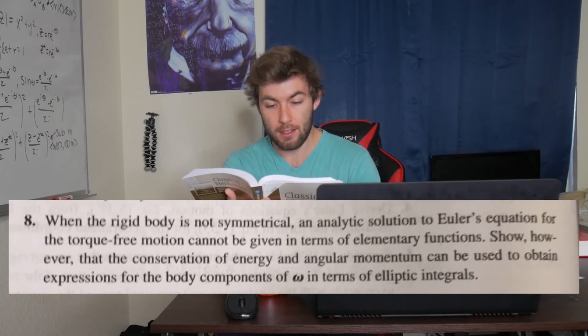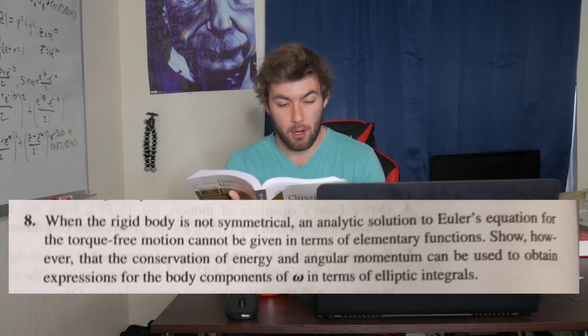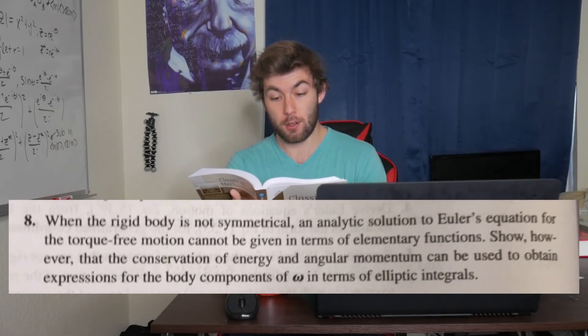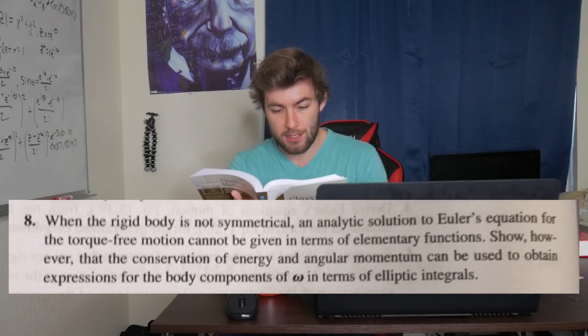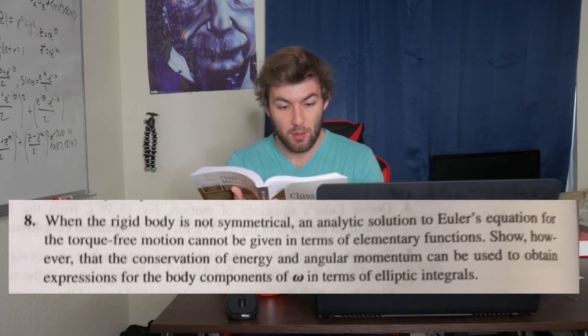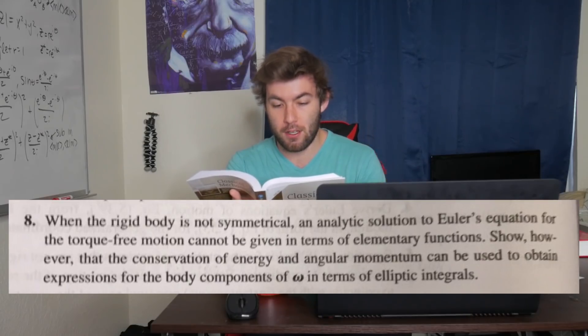I find it really helpful because in undergrad I had a really hard time with rigid body motion, so it's really nice to go more in depth with it in grad school. Just to paint a picture of what kind of problems there are, I'll read one from the Goldstein classical mechanics textbook — not actually one of the homework problems, but similar. It says: when the rigid body is not symmetrical, an analytic solution to Euler's equations for torque-free motion cannot be given in terms of elementary functions. Show, however, that the conservation of energy and angular momentum can be used to obtain expressions for the body components of omega in terms of elliptic integrals.